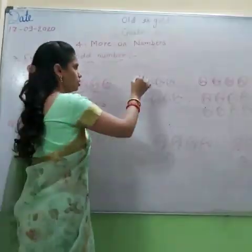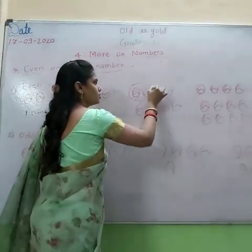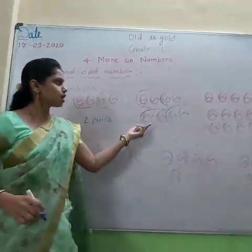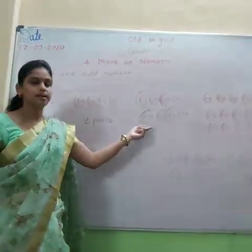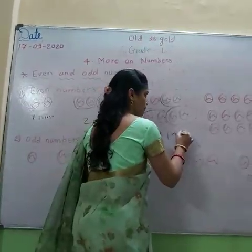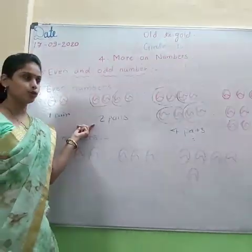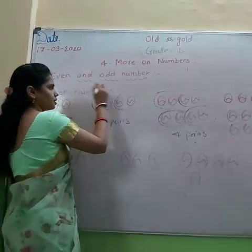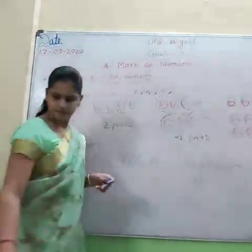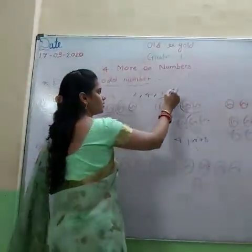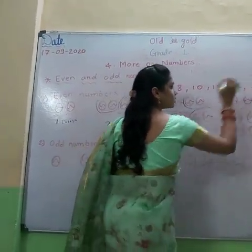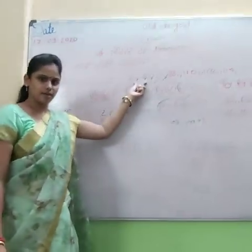Next, here also — same. 1, 2, 3, 4 pairs. Means all balls are in pairs: 1, 2, 3, 4 — now 4 pairs. Means it is a multiple of 2. Even numbers are 2, 4, 6, 8, 10, 12, 14... all these numbers are even numbers.